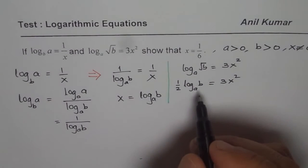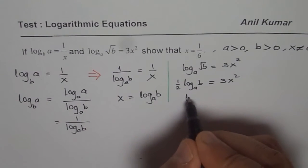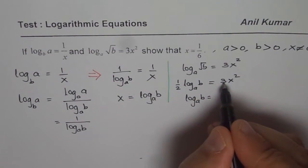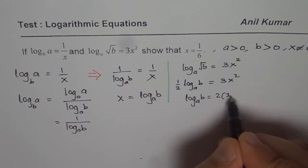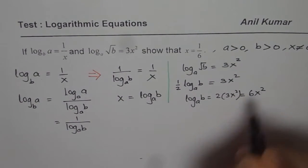Or let me go one more step. And let me write this as log a of b equals 2 times 3x square, which is equal to 6x square. Perfect.